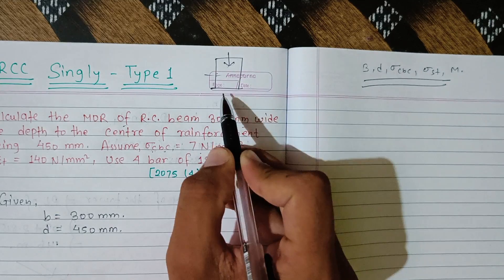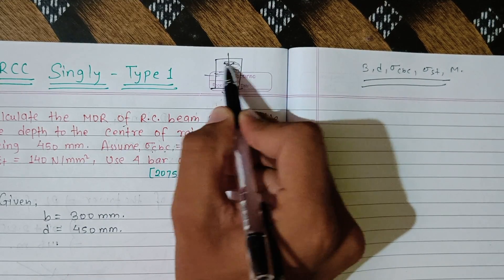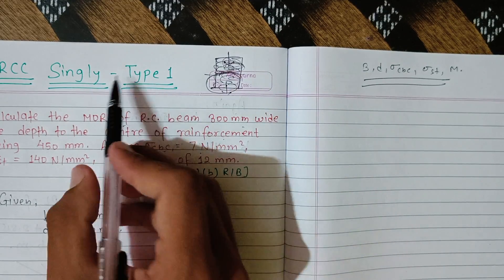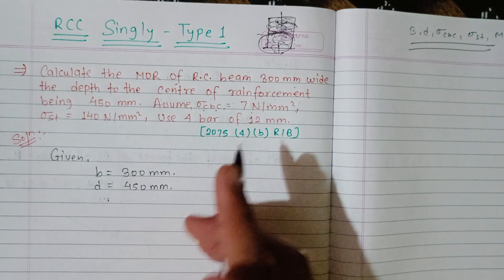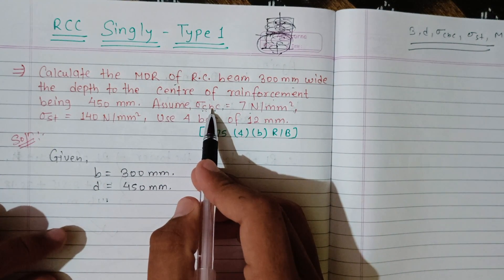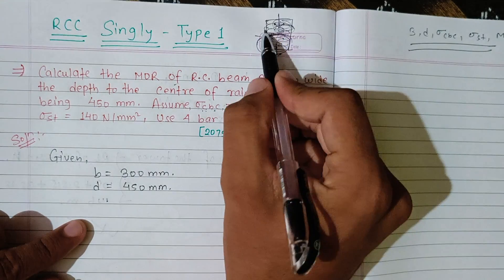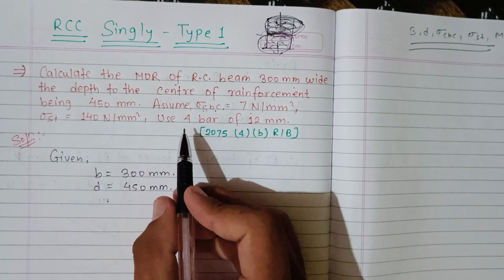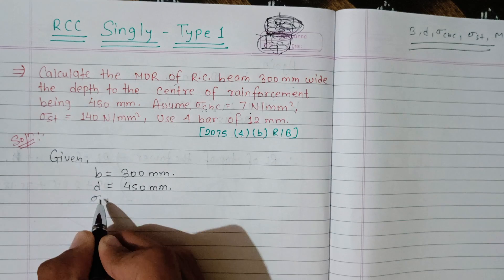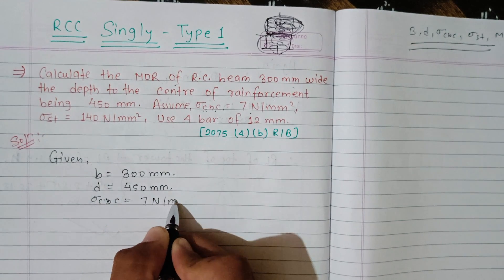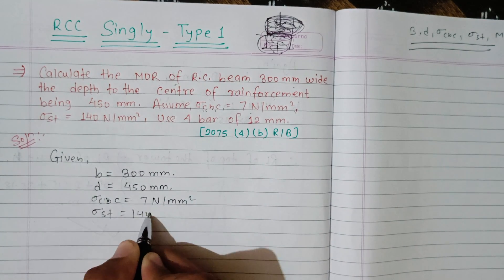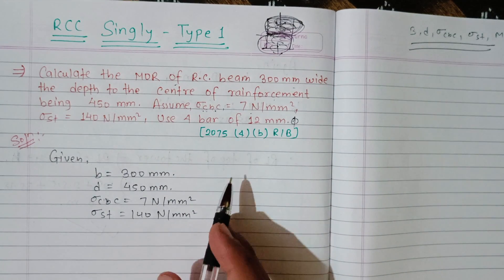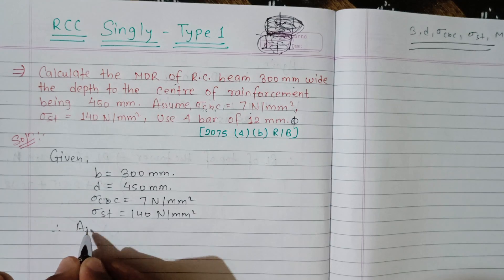Sigma cbc is 7 newton per mm square. Sigma st is 140 newton per mm square. We use 4 bars of 12mm diameter. The area of steel Ast is to be calculated.